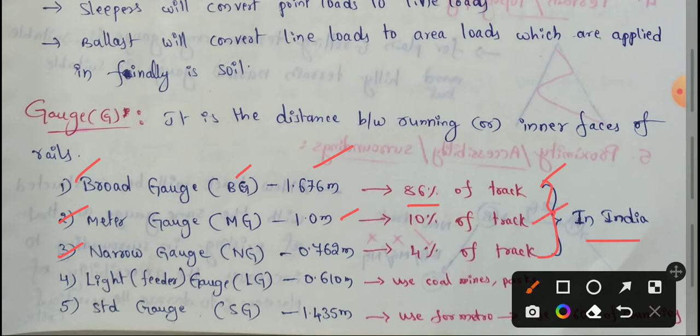This is 10% of the meter gauge track. The narrow gauge is 0.762 meters. This is part of the Indian Railway system and represents 4% of the total track.